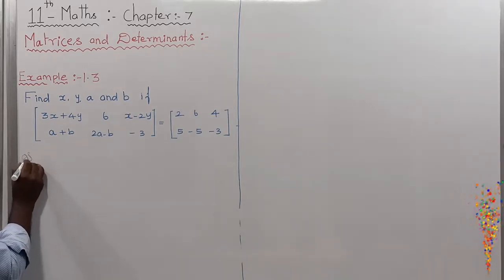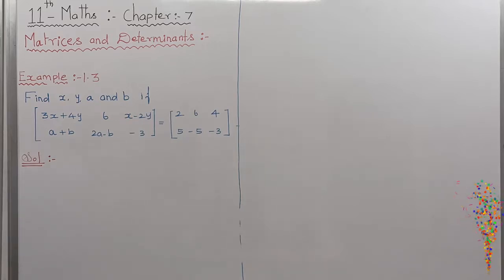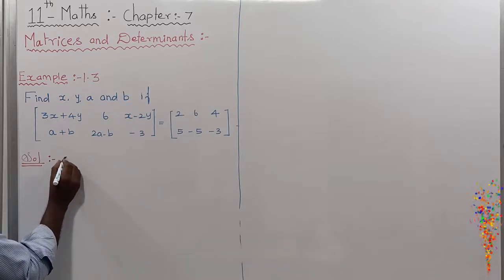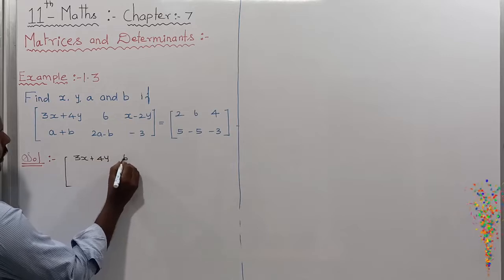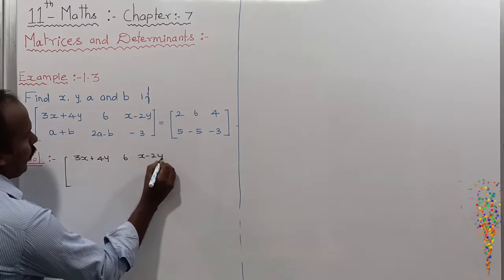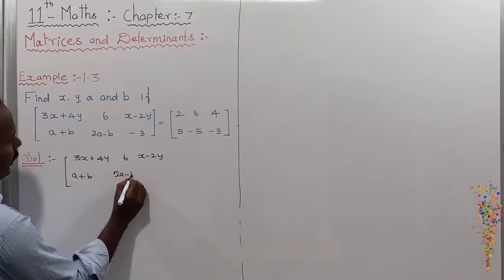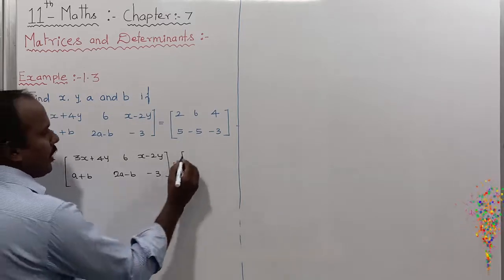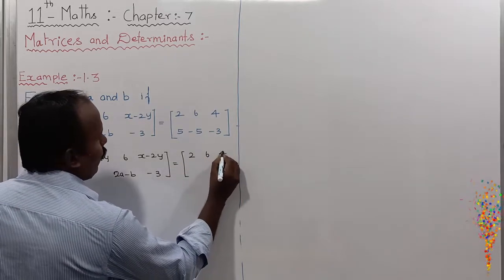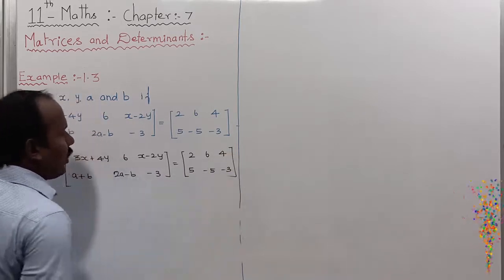To find out the values, the given matrix is: 3X plus 4Y, 6X minus 2Y, A plus B; next row: 2A minus B, minus 3. This is equal to the right side matrix: 2, 6, 4; next row: 5, minus 5, minus 3.